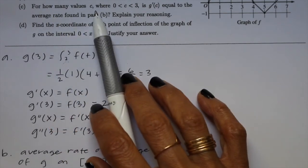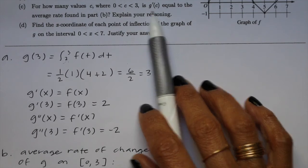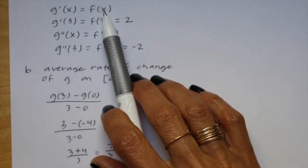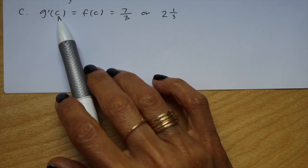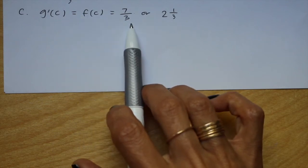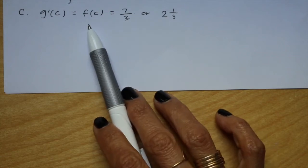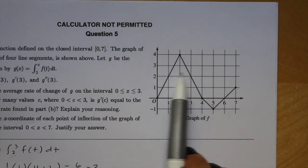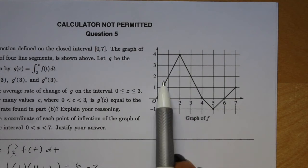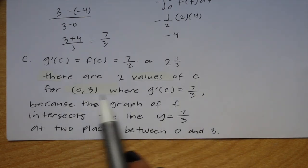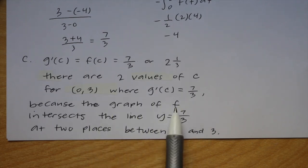Part c asks for how many values of c, where c is between 0 and 3, is g prime of c equal to the average rate of change from part b. Since g prime of x equals f of x, we have g prime of c equals f of c, and we set that equal to 7 thirds, or 2 and 1 third. We look at the graph to see where the height equals 7 thirds. There are two values of c in the interval from 0 to 3 where g prime of c equals 7 thirds, because the graph of f intersects the line y equals 7 thirds at two places between 0 and 3.